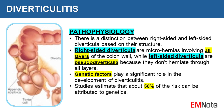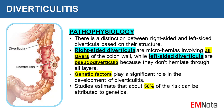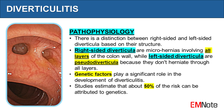There is a distinction between right-sided and left-sided diverticula based on their structure. Right-sided diverticula are microhernias involving all layers of the colon wall, while left-sided diverticula are pseudo-diverticula because they don't herniate through all layers. Genetic factors play a significant role in the development of diverticulitis; studies estimate that about 50% of the risk can be attributed to genetics.